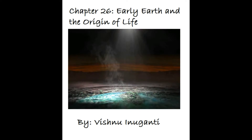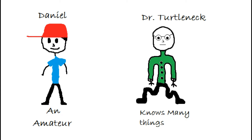Chapter 26: Early Earth and the Origin of Life. Meet our characters. Daniel is an amateur who doesn't know much about early Earth and the origin of life. Dr. Turtleneck knows many things and is well versed on chapter 26.